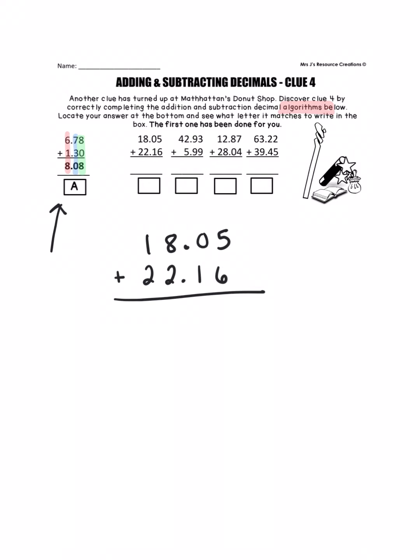So we're going to start adding with our hundredths place. You can add this just the way you would add two amounts of money. Like if this was $18.05 plus $22.16, you would start by adding your pennies first. Five plus six is eleven. We can put down the one and carry the one.